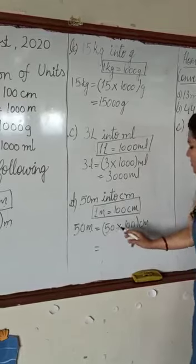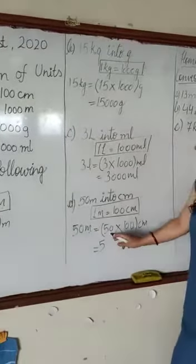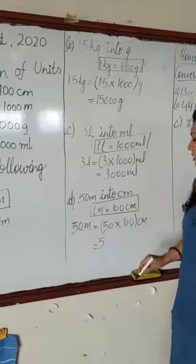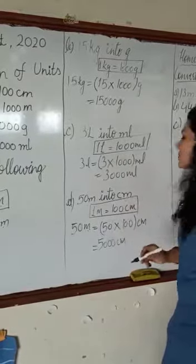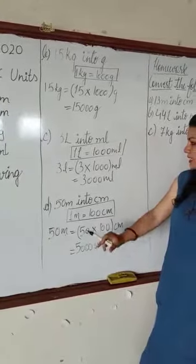Now we will multiply: 5 ones are 5. Children, don't forget this zero also. First we will count these zeros—that is 1, 2, and this one more, that is 3 zeros. So we will write 3 zeros, and the unit will be centimeters. So 50 meters equals 5000 centimeters.